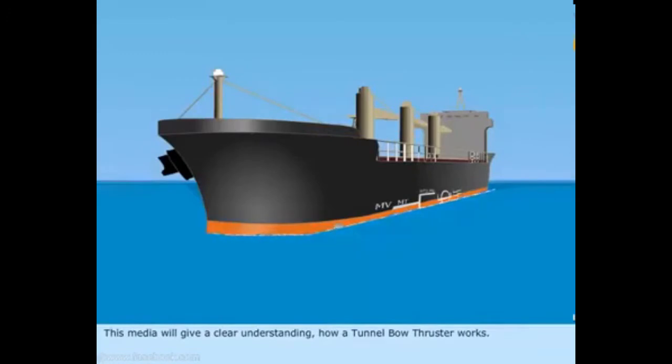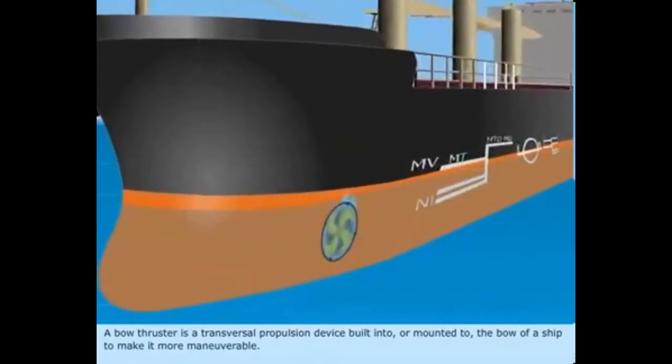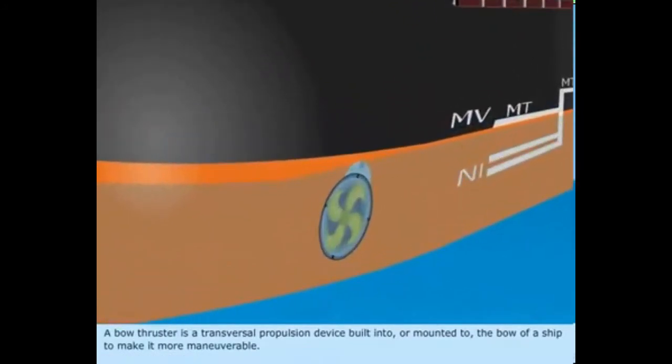This media will give a clear understanding of how a tunnel bow thruster works. A bow thruster is a transversal propulsion device built into or mounted to the bow of a ship to make it more maneuverable.